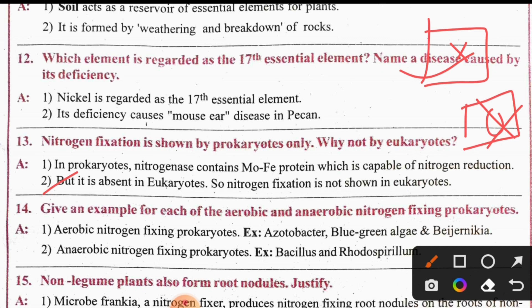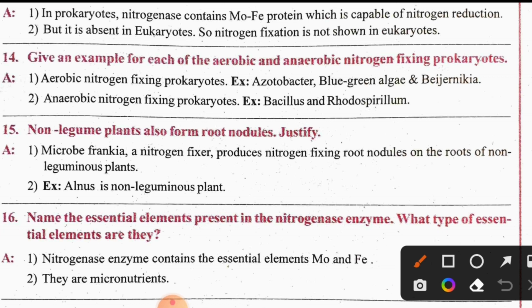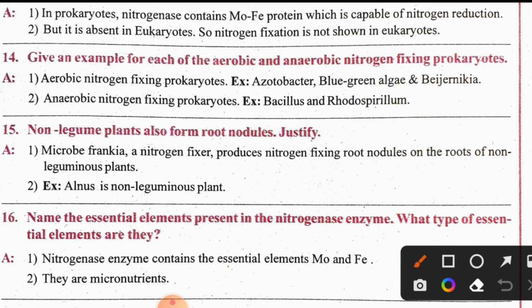The 15th question: non-legume plants also form root nodules — justify. The microbe Frankia produces nitrogen-fixing root nodules on the roots of non-legume plants. For example, Alnus is a non-leguminous plant. Frankia is the microbe that helps fix nitrogen in such non-legume plants.